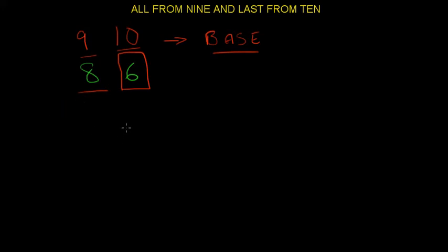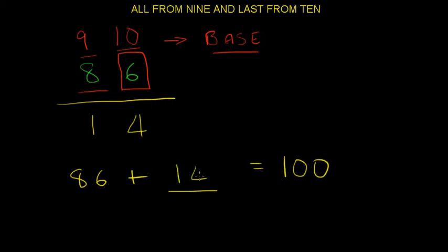And what does that do? We know that complement of 8 would be 1 considering the base is 9. Complement of 6 is 4 considering the base is 10. So, our original base of 100, the whole number, we get 14. So, a complement of 86 is 14.